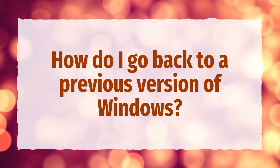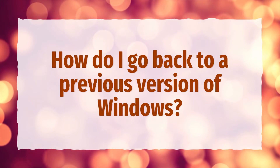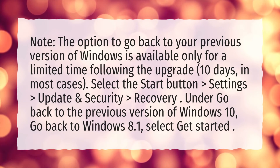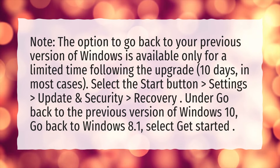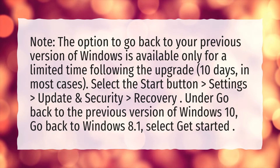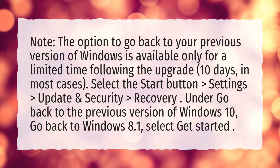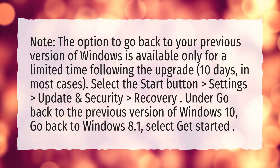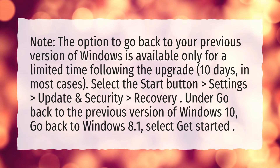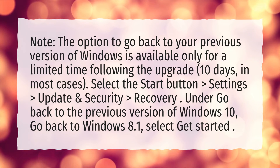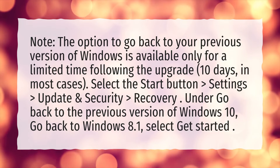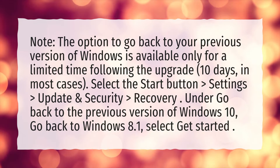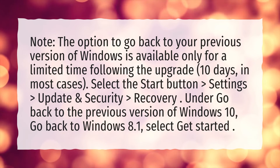How do I go back to a previous version of Windows? Note: the option to go back to your previous version of Windows is available only for a limited time following the upgrade — 10 days in most cases. Select the Start button, Settings, Update and Security, Recovery. Under Go Back to the previous version of Windows 10 or go back to Windows 8.1, select Get Started.